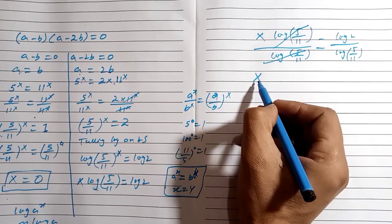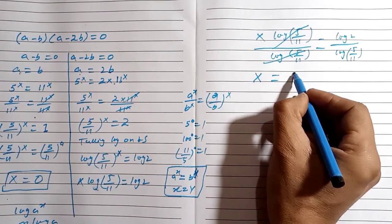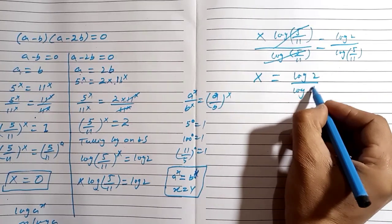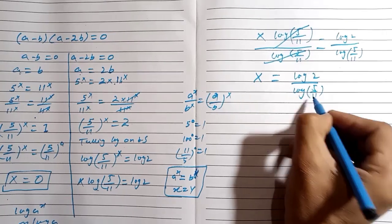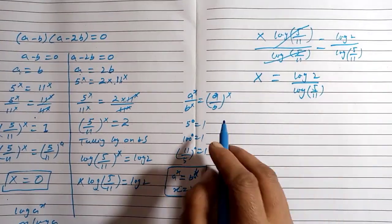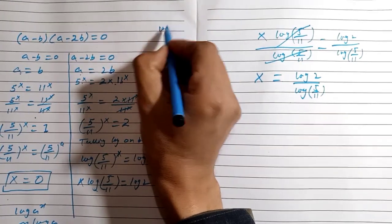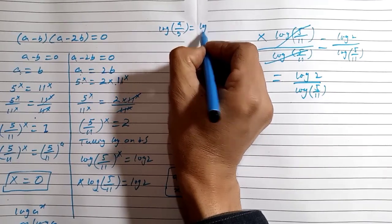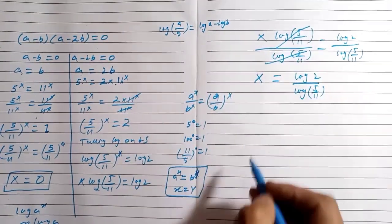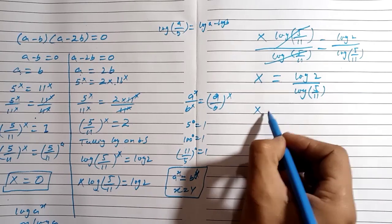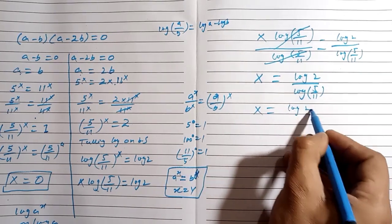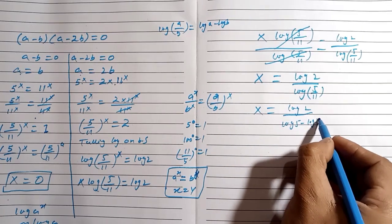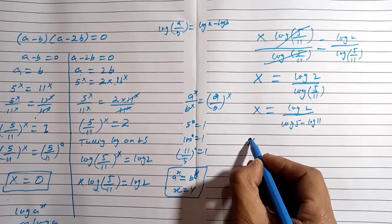So x equals log 2 divided by log(5/11). Using the log rule log(a/b) = log a minus log b, the denominator becomes log 5 minus log 11. Therefore x equals log 2 divided by (log 5 minus log 11).